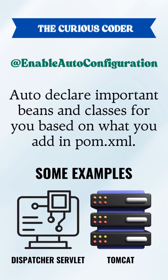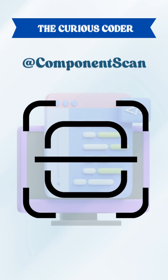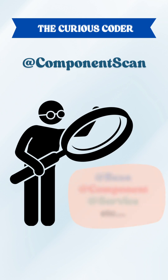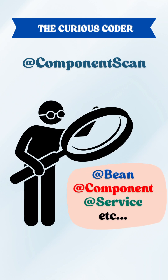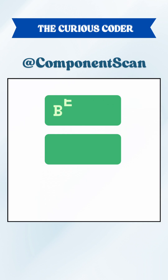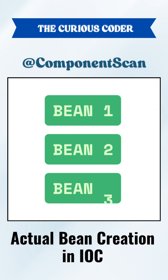@EnableAutoConfiguration will auto-declare some important beans for you based on what you have added in pom.xml — you don't have to write that code. @ComponentScan scans your project and looks out for annotations like @Bean, @Component, @Service, etc., and creates the beans for them. Actual bean creation of the declared beans takes place because of component scan.